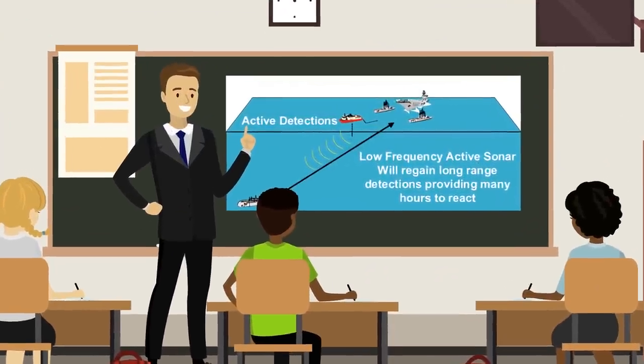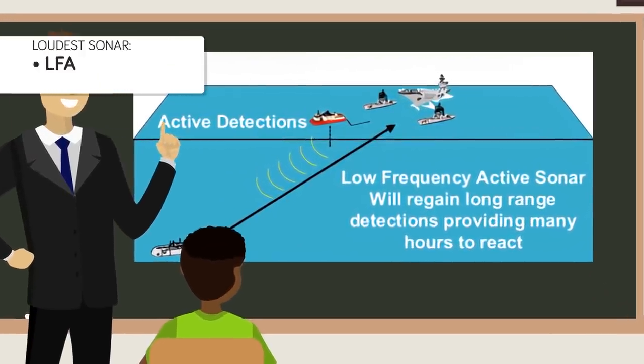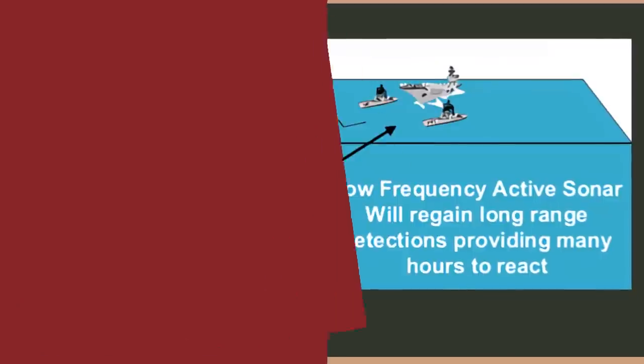32. When actively looking for an enemy submarine though, LFA sonar is the loudest man-made noise reaching over 200 decibels.